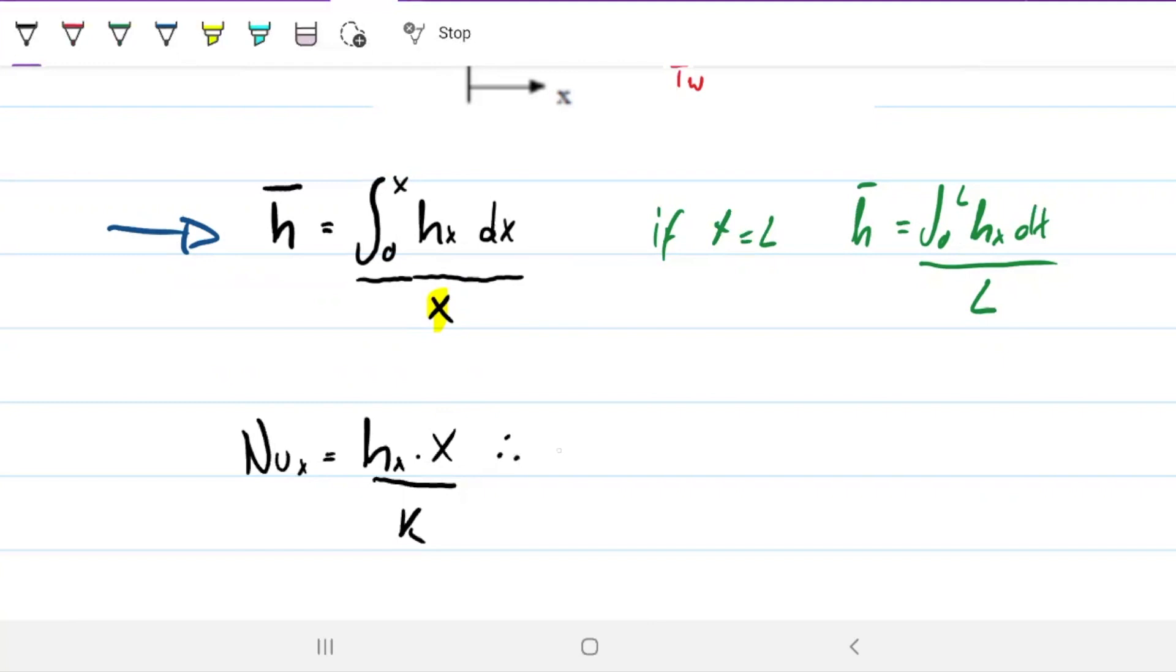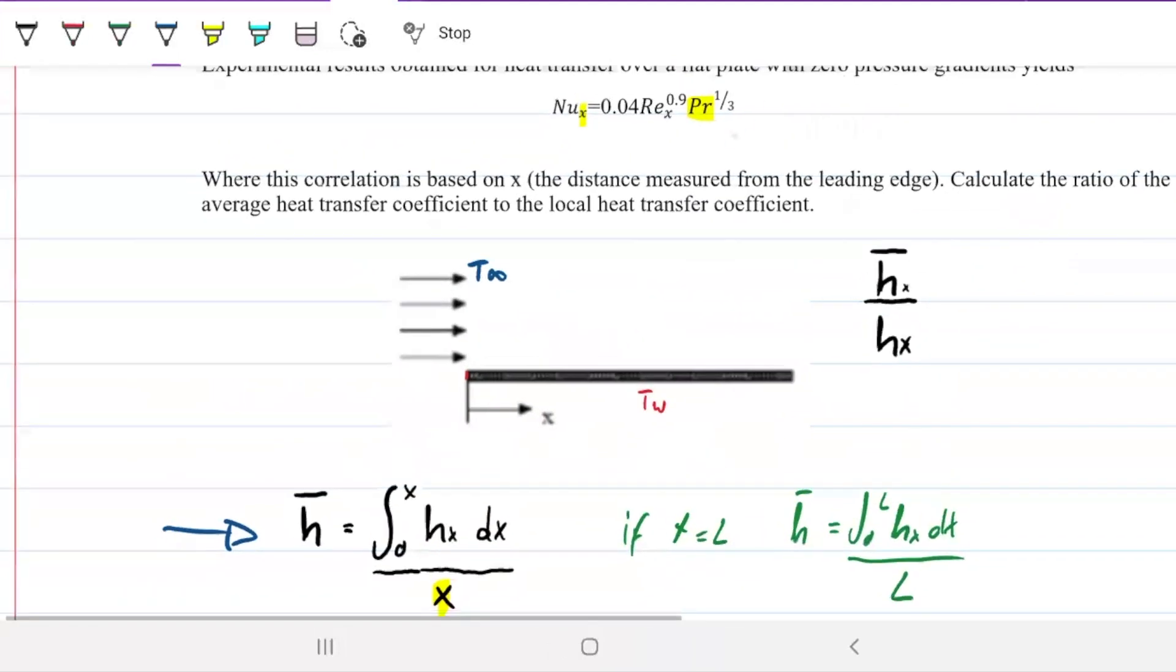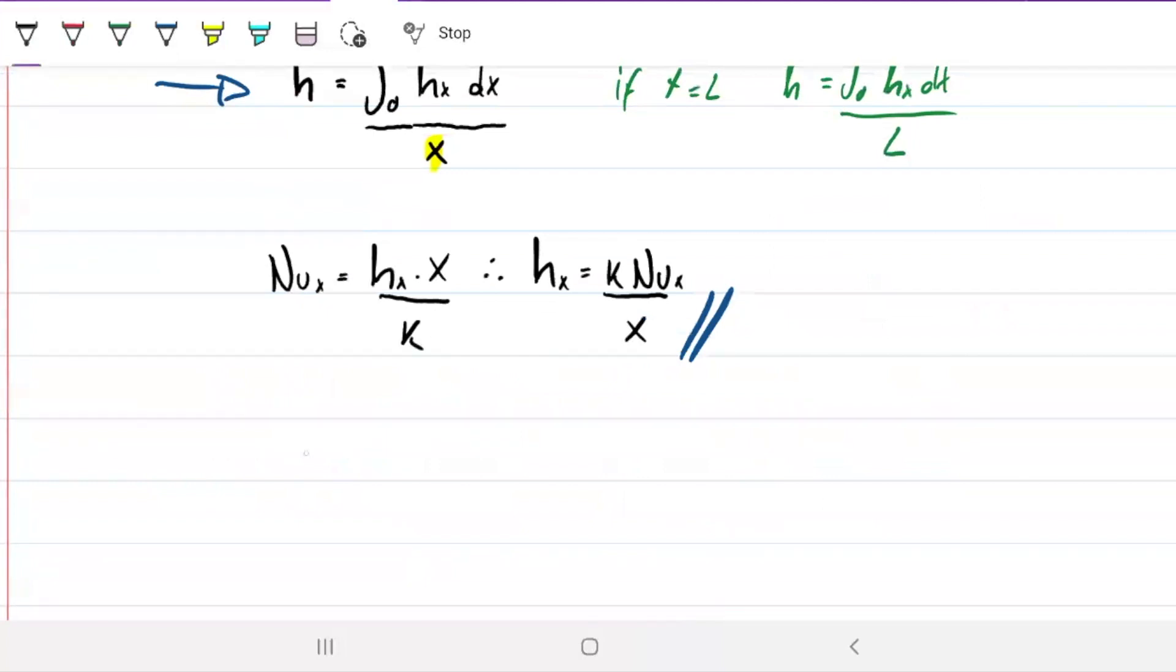So that means that my local coefficient equals my Nusselt at any point times my conductivity divided by dx. Now we're going to combine this equation here with the one that we know for our Nusselt.